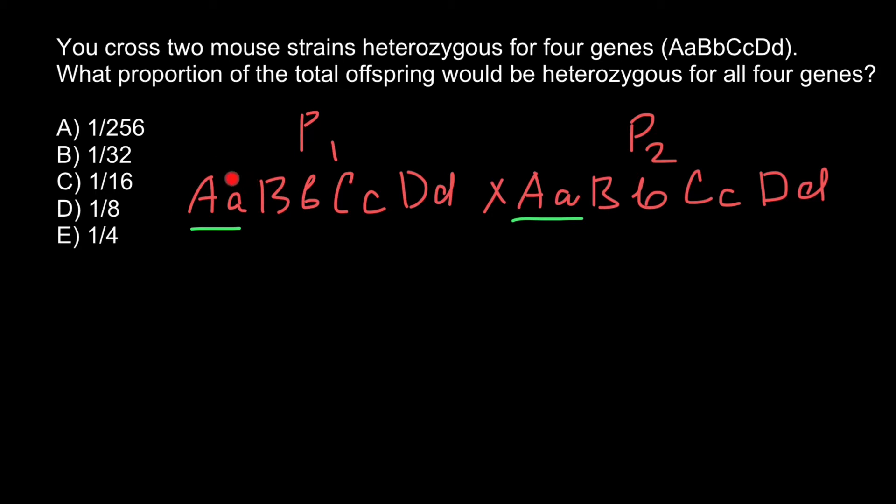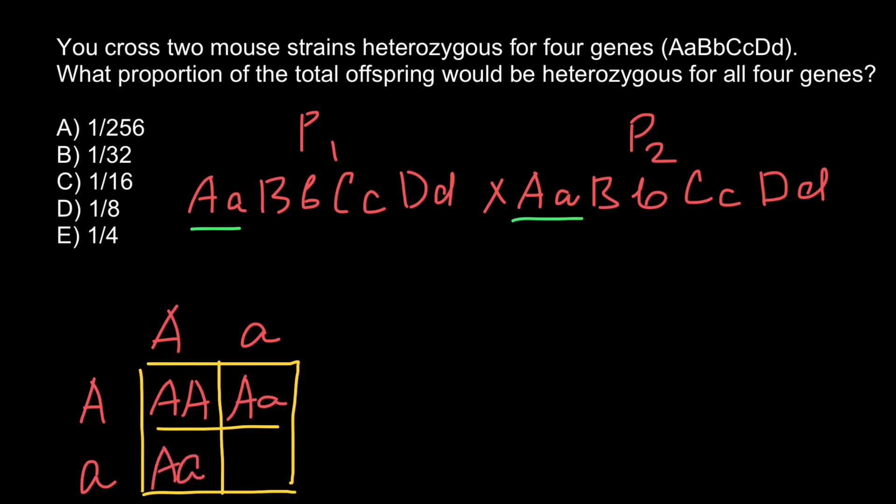Let's look at what happens to the first pair of genes. Parent 1 is heterozygous and parent 2 is also heterozygous. When we cross them, in their progeny we expect the following genotypes: AA, Aa, Aa, and aa.